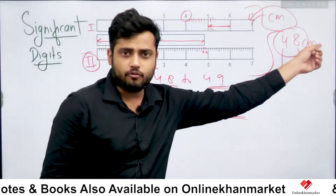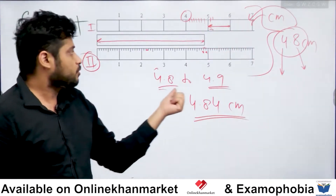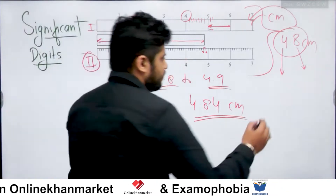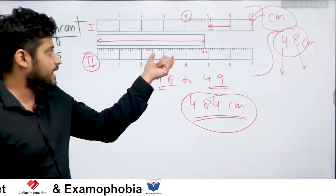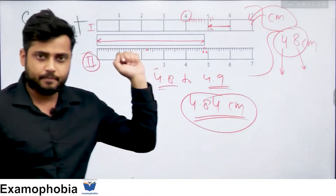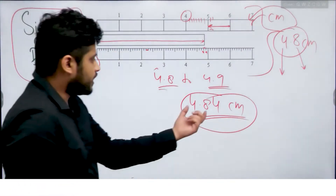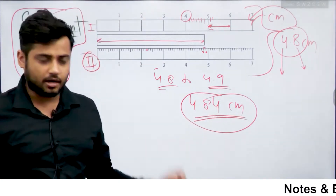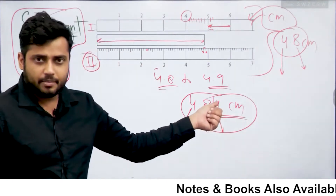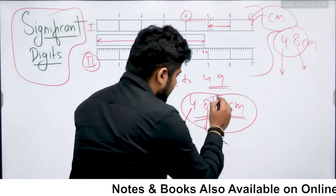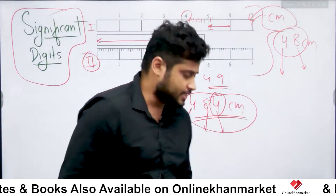Bahut farq hai, jab aap likh rahe ho 4.8, wahan aapka scale ke baare mein bata raha hai — scale at best kya measure kar sakti hai. 4.84 agar likh rahe ho, to yeh bhi hamare scale ke baare mein bata raha hai. Toh isi liye physics ke andar, jabhi bhi hum measured values likhte hain, toh isi tariqe se likhte hain, taaki hum apne scale ka accuracy level uske andar reflect ho. Toh isi liye hum in sabhi digits ko significant digits bolte hain, jo ki reliably known digits hain kisi measurement ke andar. Toh yahan par yeh saari digits — 4, 8, aur yeh wala char jo eye estimation se mila — yeh least reliably known digit hai, sab se zyada uncertain digit hain isi ko bolte hain, aur yeh teeno ki teeno digits significant digits hain.